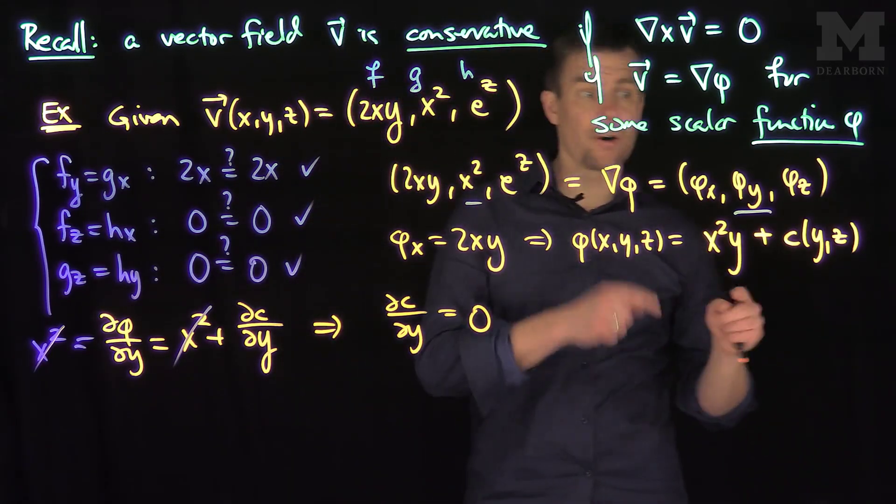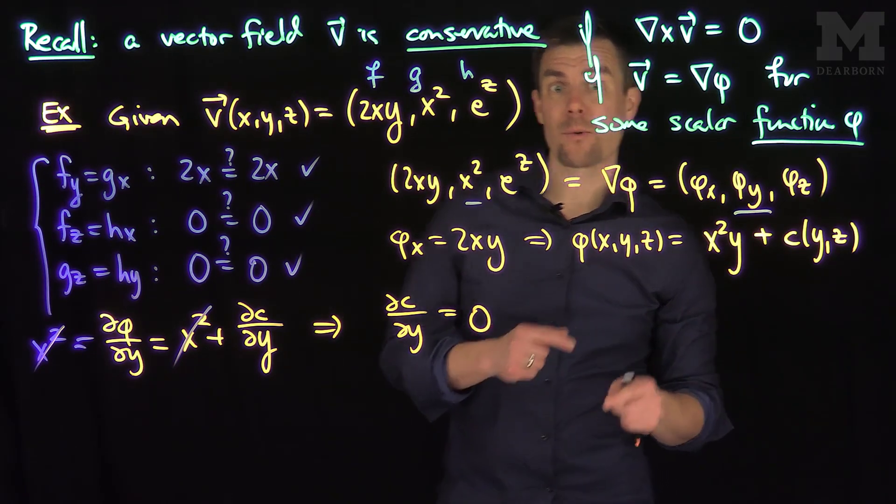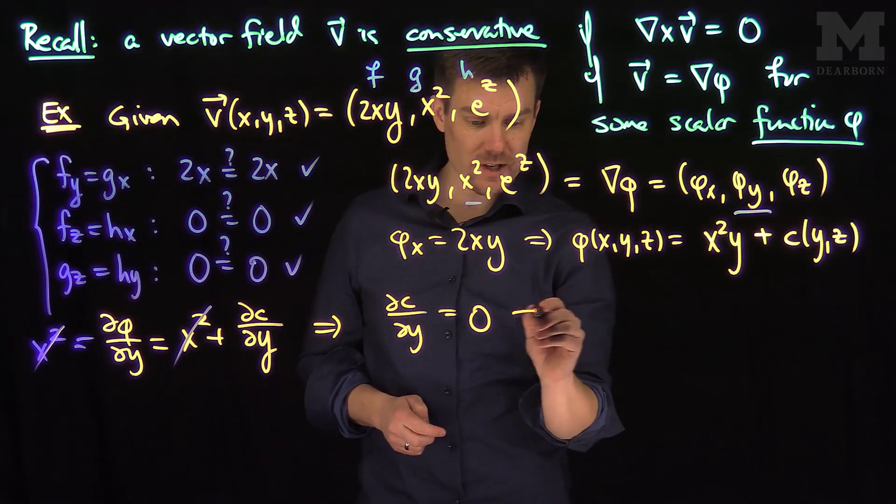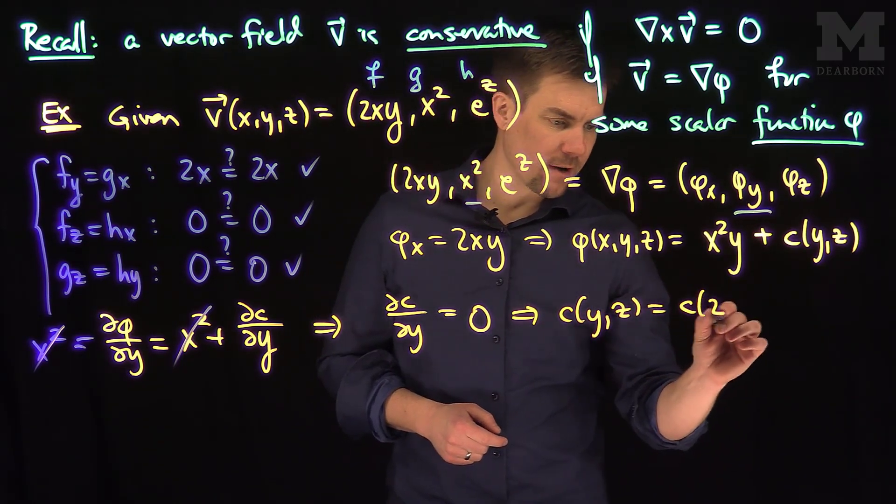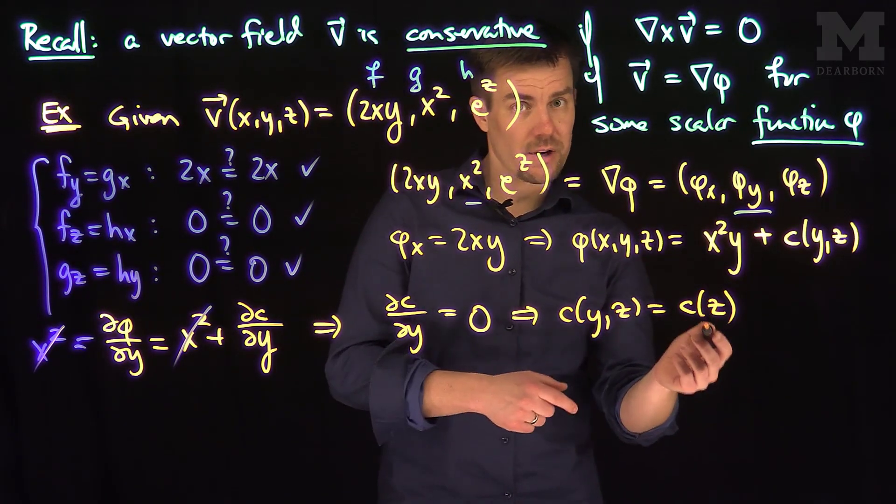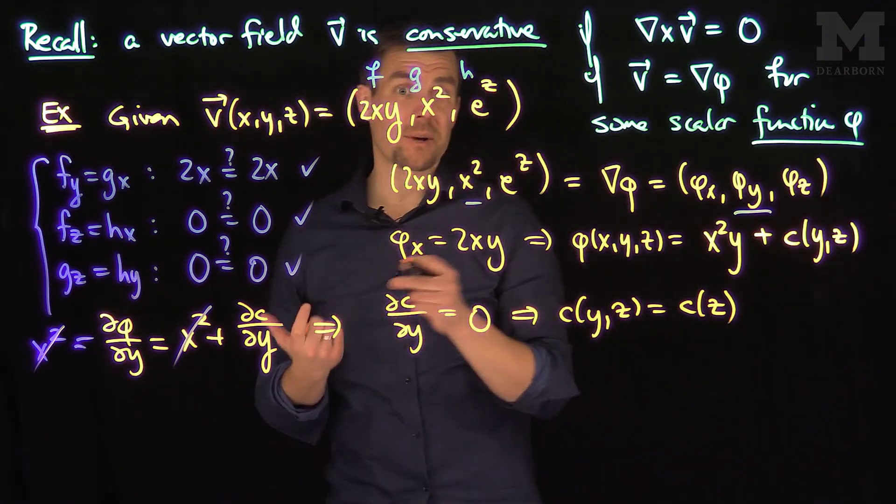Which says that C as a function of Y and Z has a zero derivative with respect to Y, which means that C is only a function of Z. Because the derivative with respect to Y of a function of Z is equal to 0, since Y and Z are independent variables.